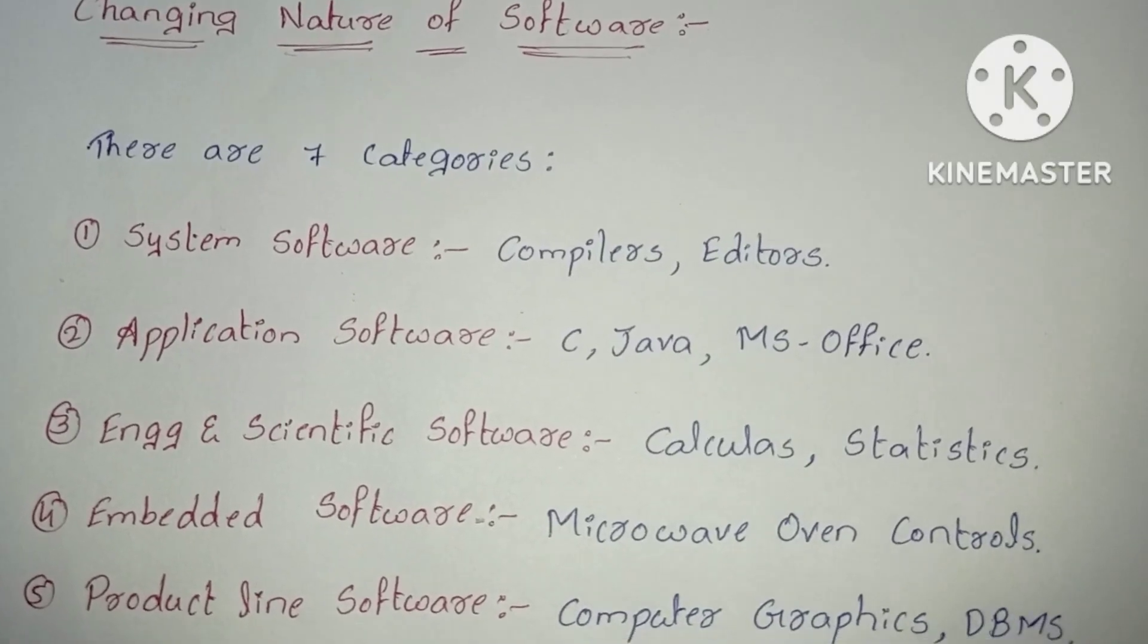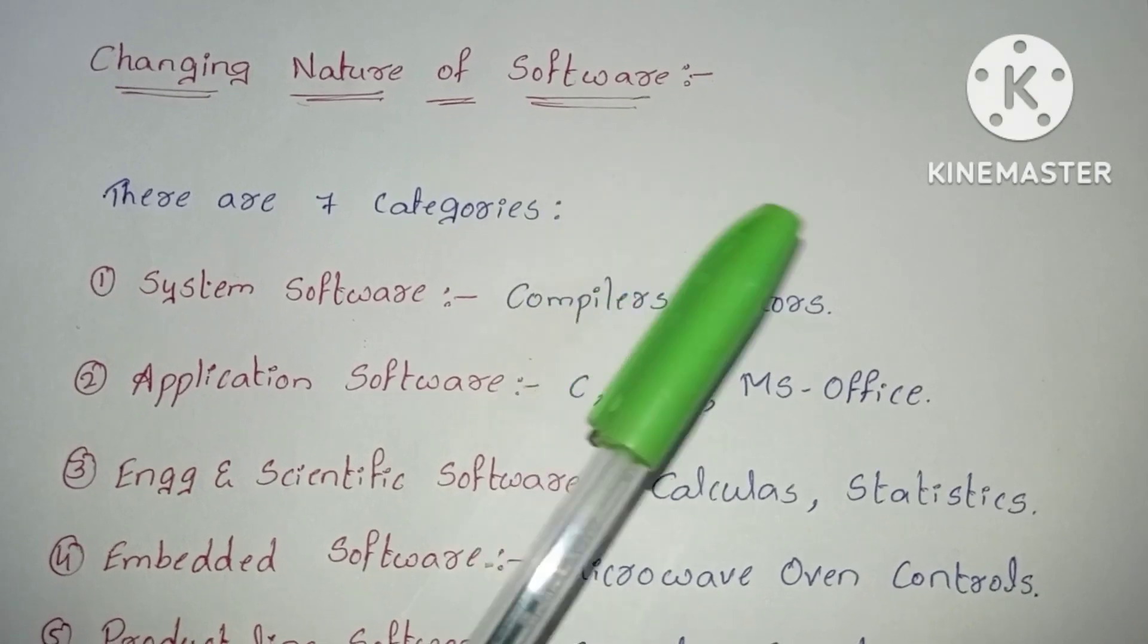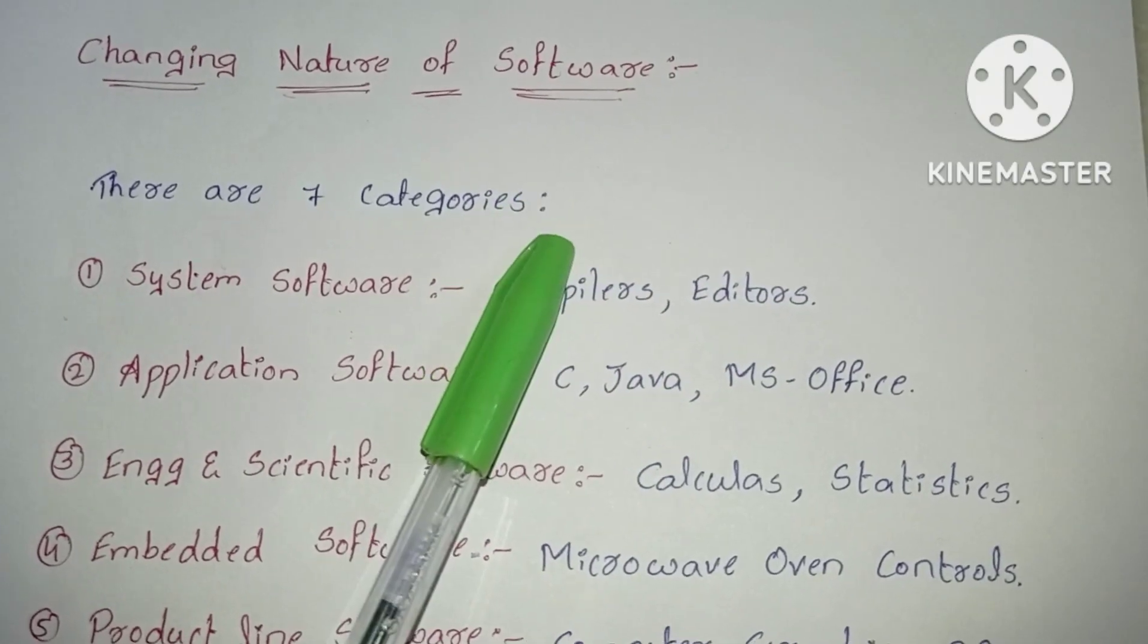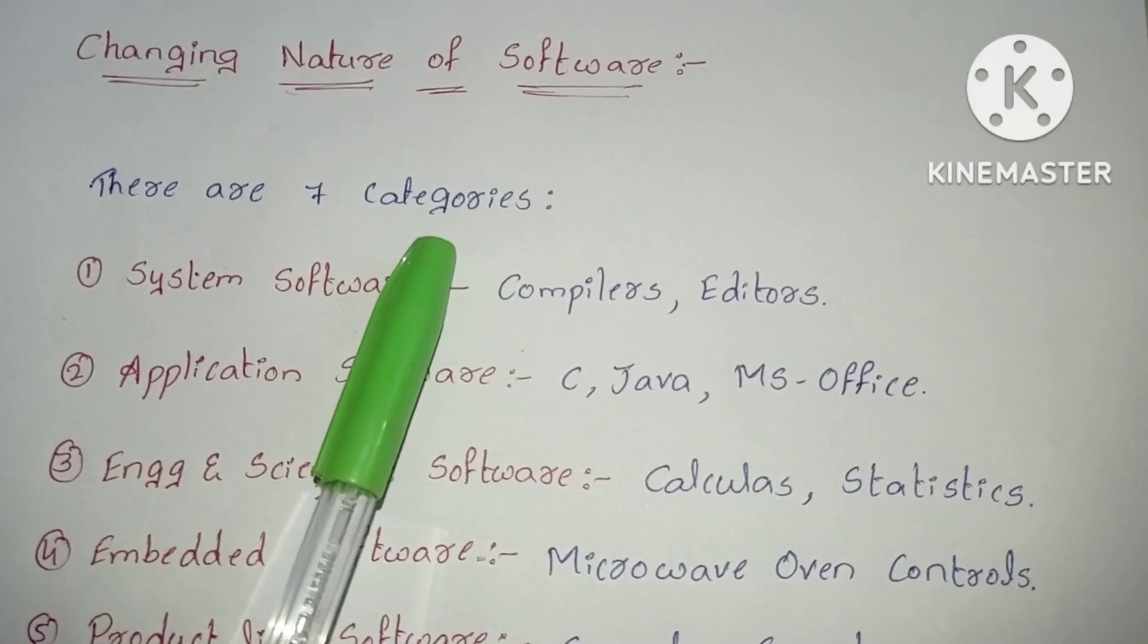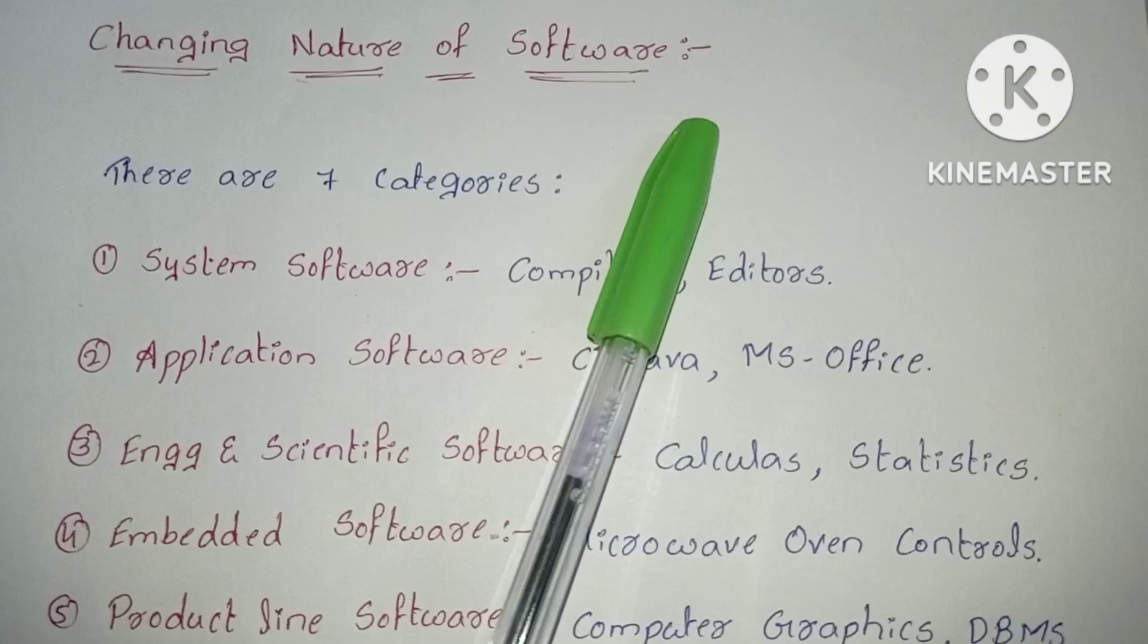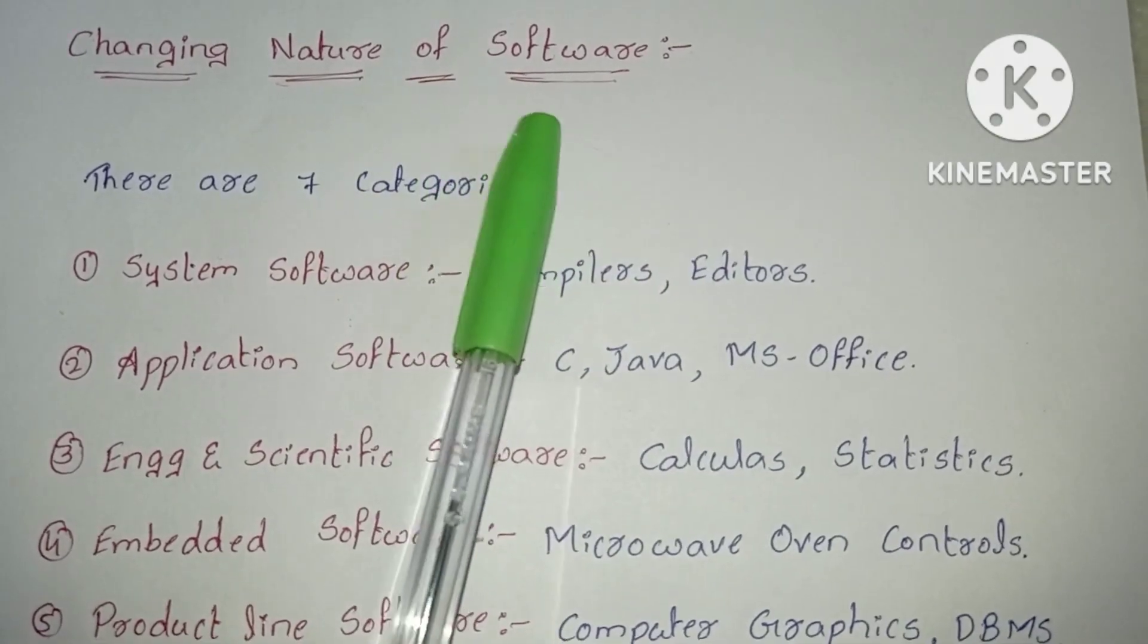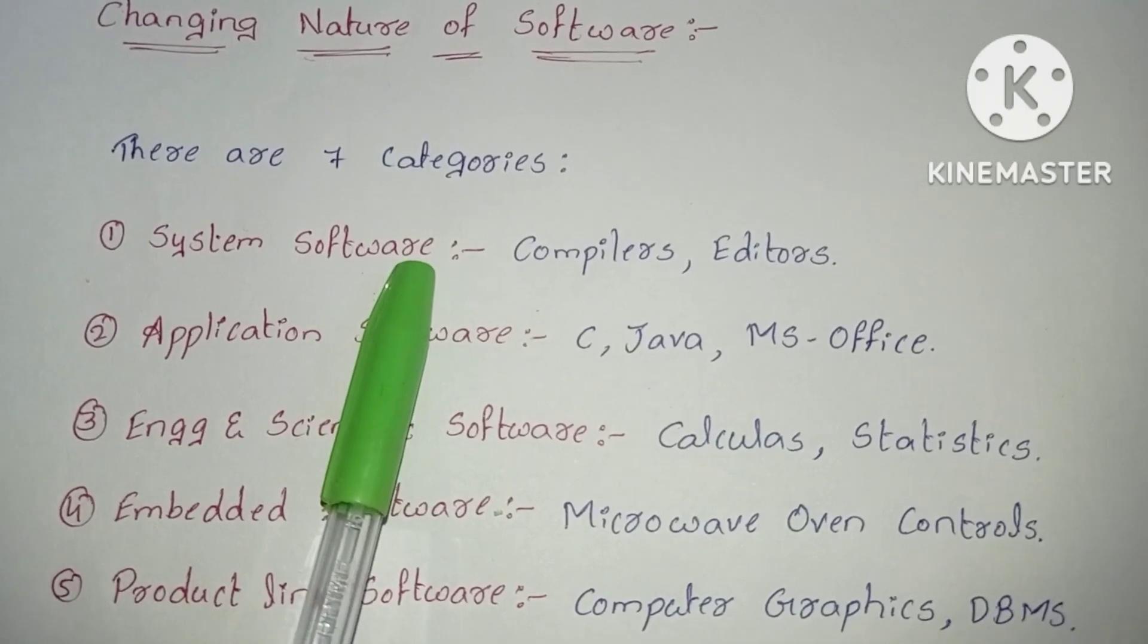Hi everyone, today I am going to explain about the topic changing nature of software. In general, human beings also change their nature according to the situation in which place they are. Software is also everywhere and anywhere. It keeps on changing from one situation to another. There are seven categories exist in changing nature.